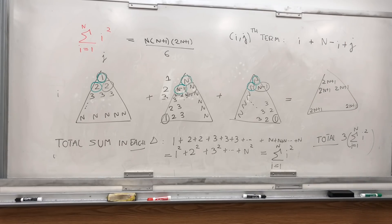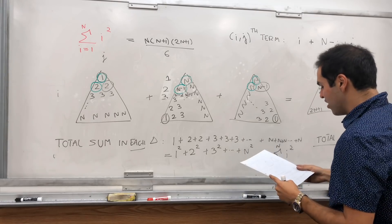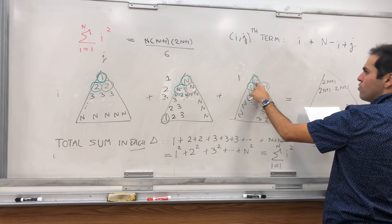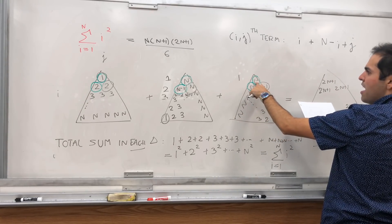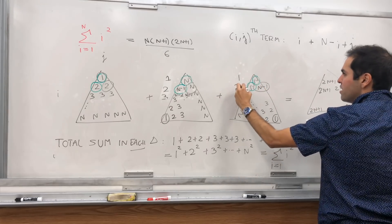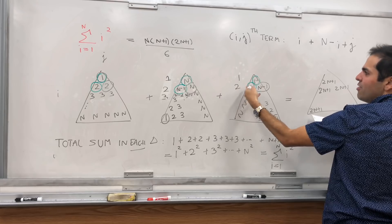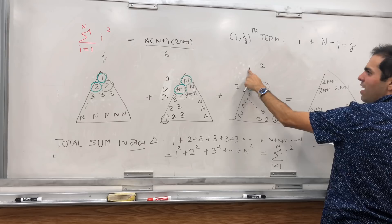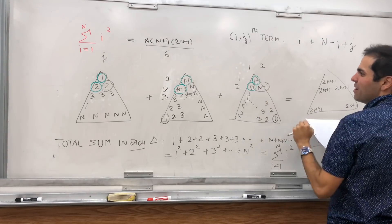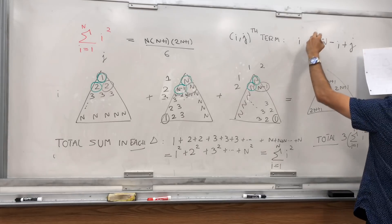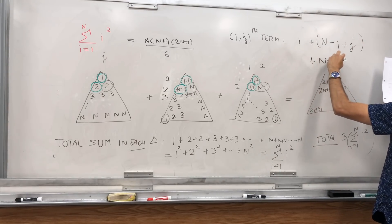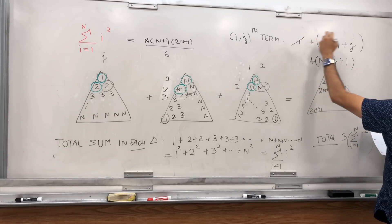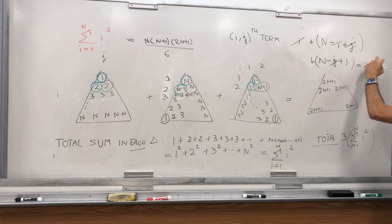For the third triangle, it doesn't matter which row we're in — it just depends on the column. The entries are n minus 1 plus 1, n minus 2 plus 1, and so on. So the ij-th entry is n minus j plus 1. Now if you add the three entries — i, plus n minus i plus j, plus n minus j plus 1 — the i's cancel, the j's cancel, and you get 2n plus 1.